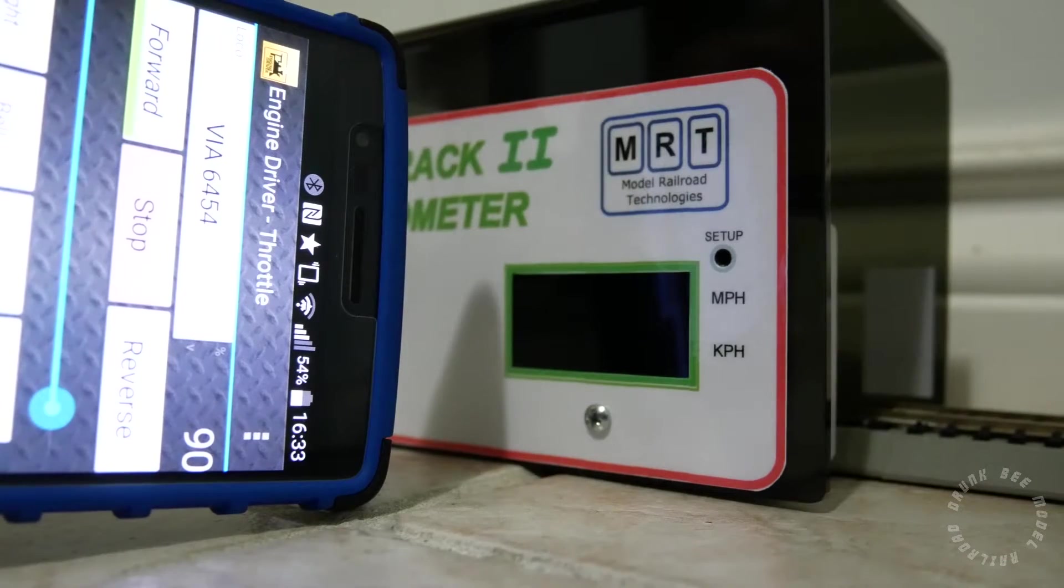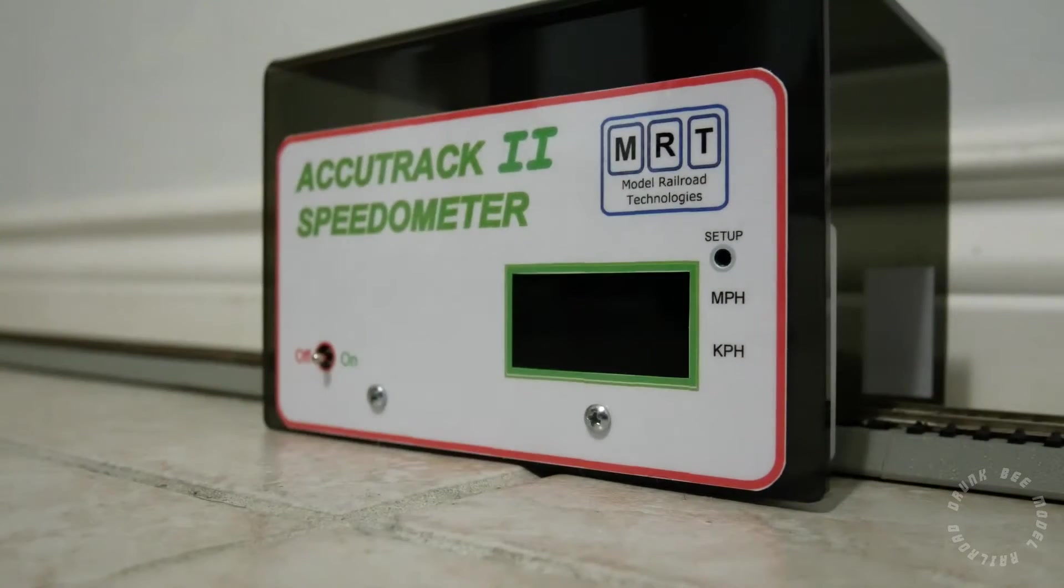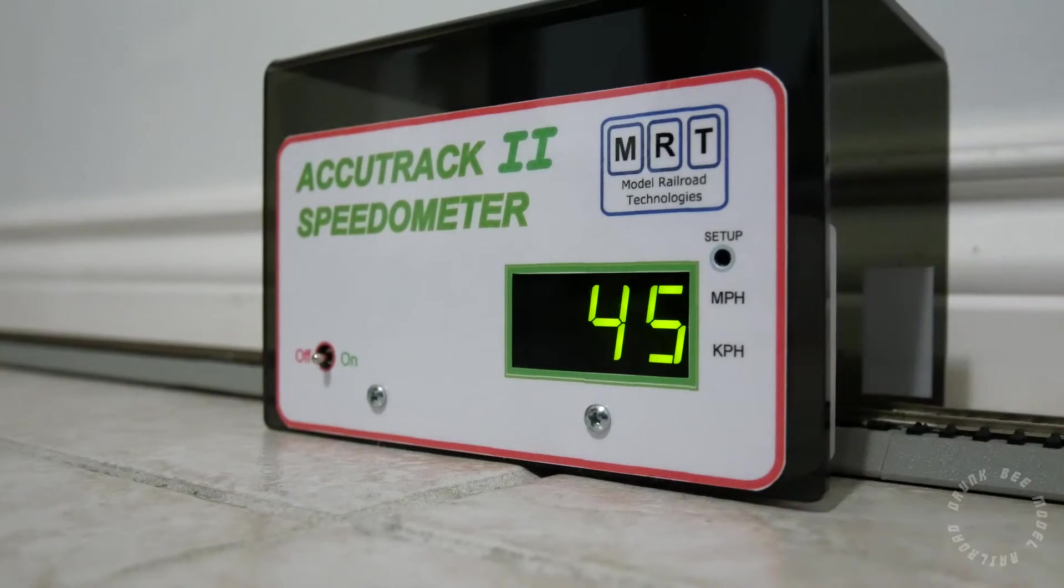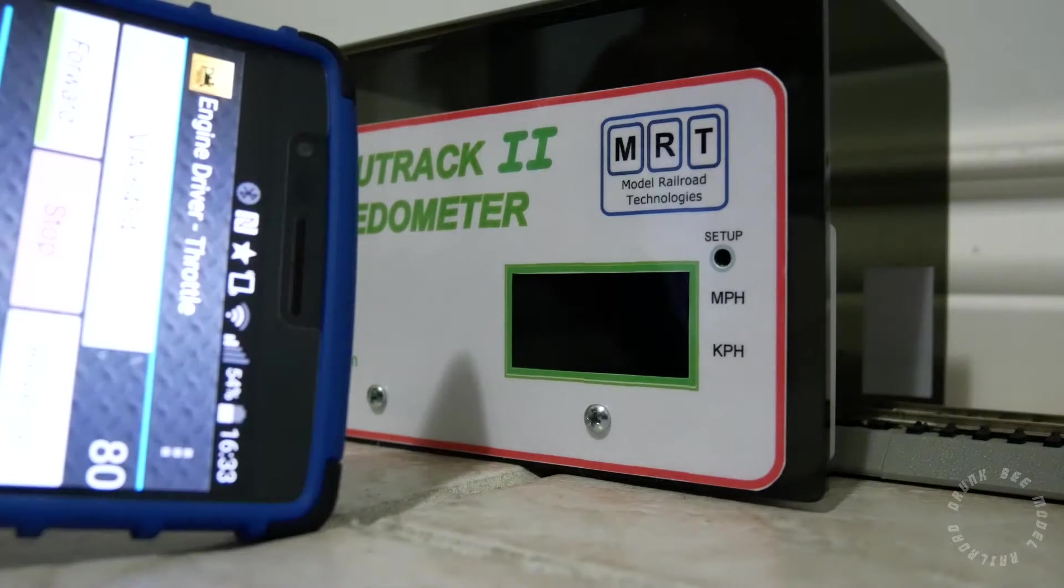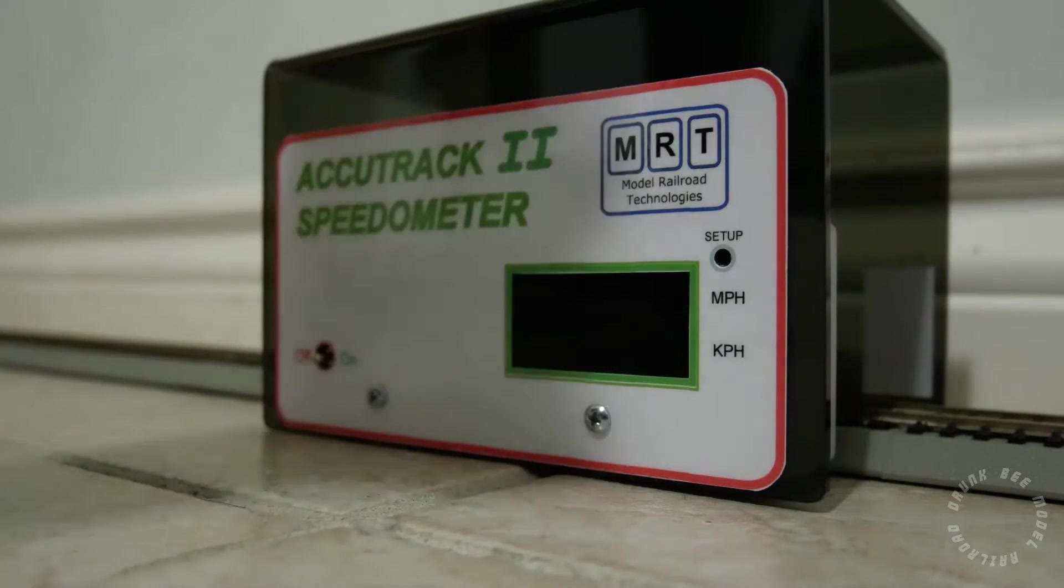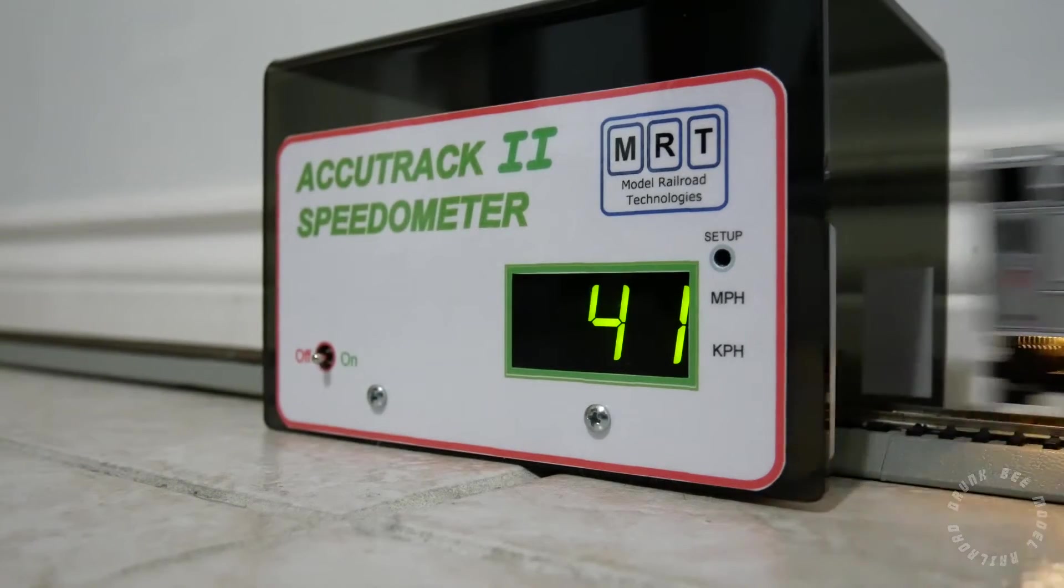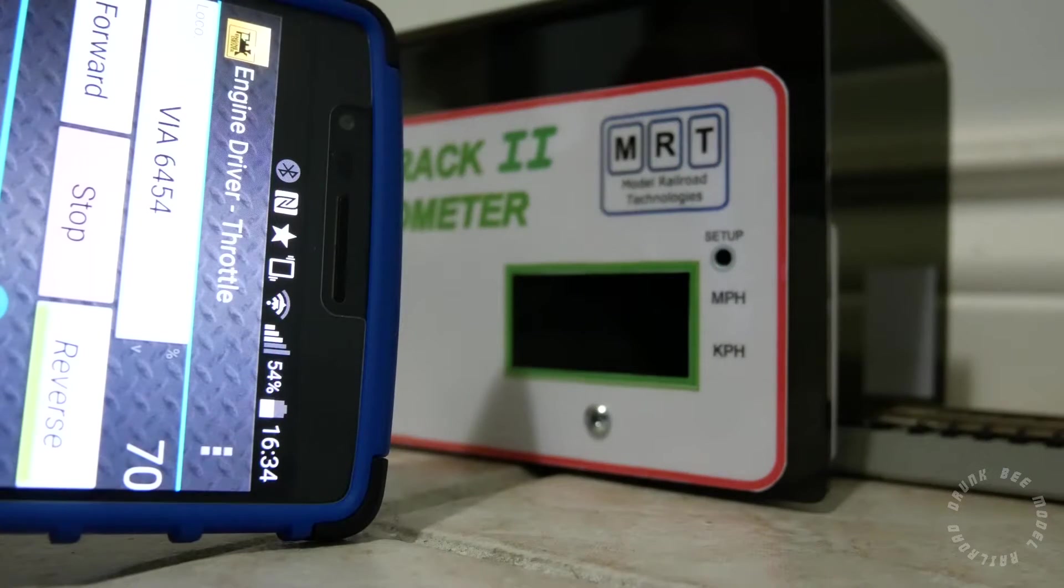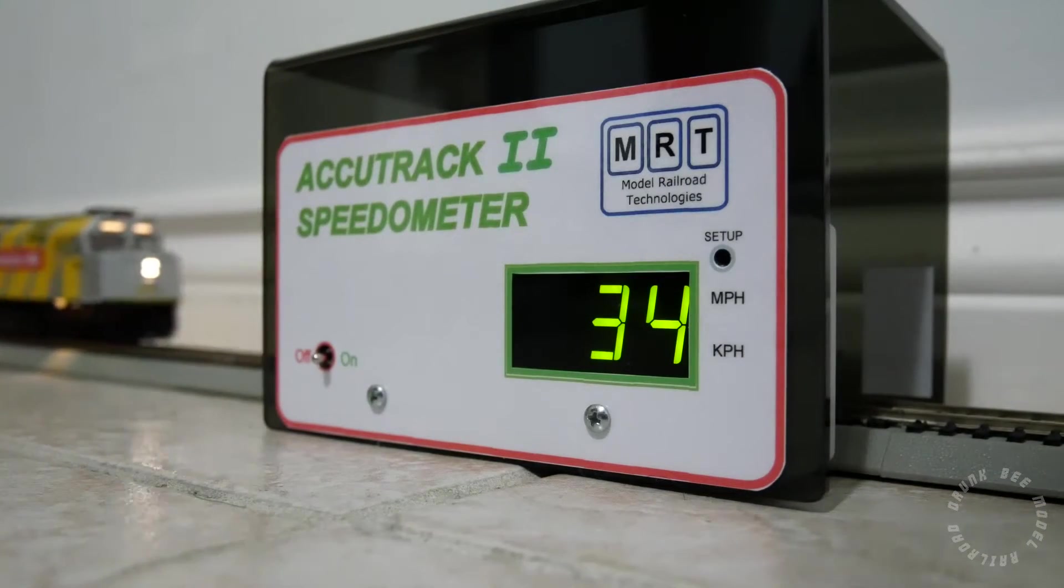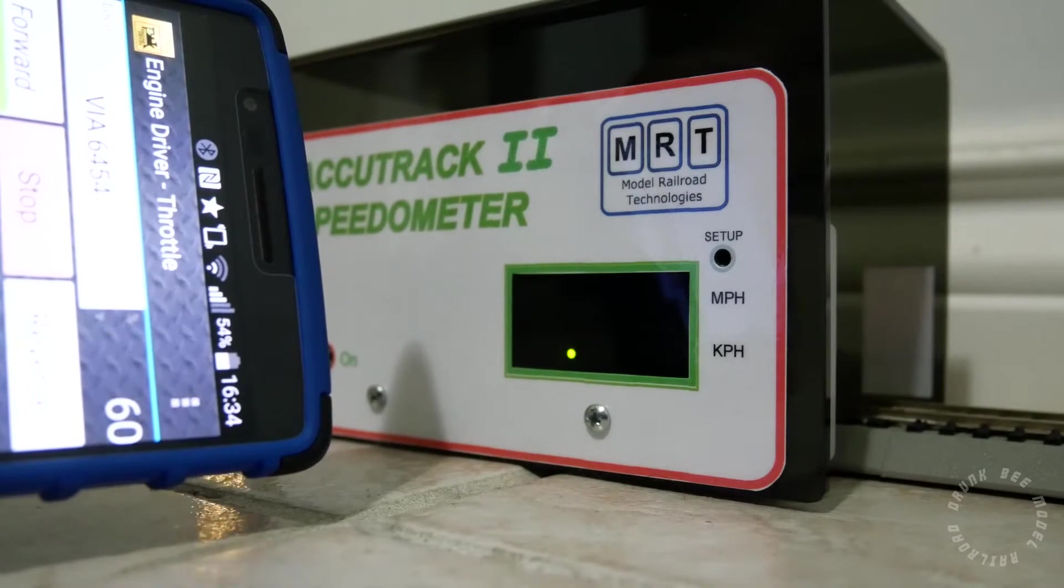Test the locomotive at various throttle positions and check that the speed matches the throttle position. For example, at 90% throttle, the locomotive should run at 45 scale miles per hour. At 80%, it should run at 40 scale miles per hour. At 70%, it should run at around 35. 60% makes it run at 30, so on and so forth.